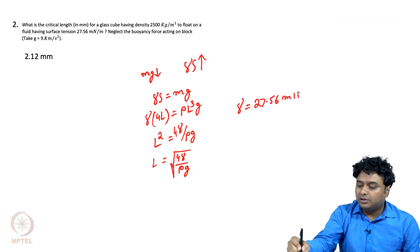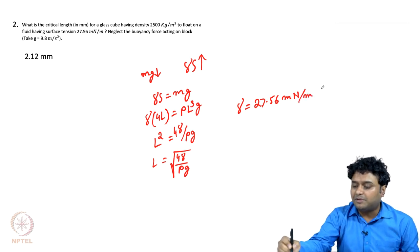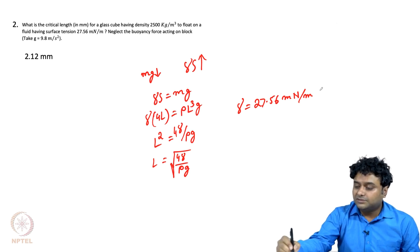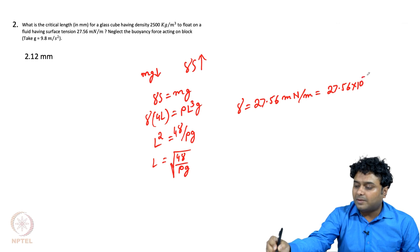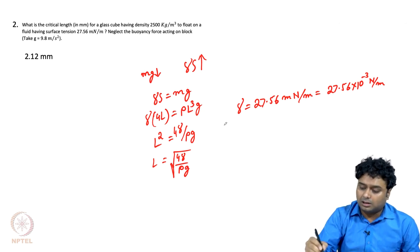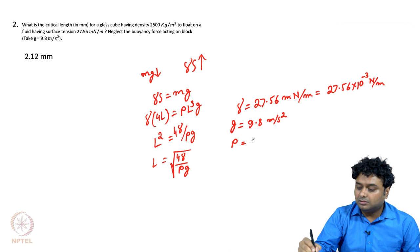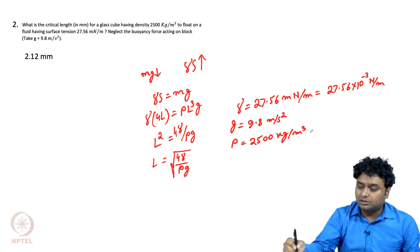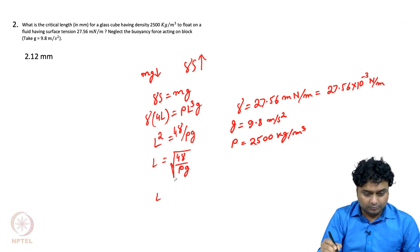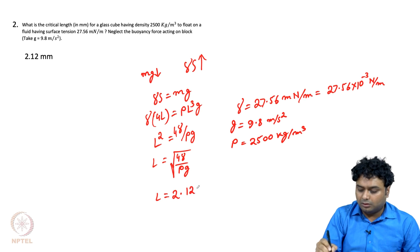You have to be very careful with units. 27.56 milli-Newton per meter equals 27.56 times 10 to the power minus 3 Newton per meter — everything in SI units. So accordingly we convert all values to SI: g equals 9.8 m/s², and rho is given as 2500 kg per meter cube. Putting all these values in, we get L equals 2.12 millimeters.